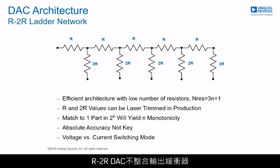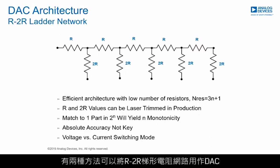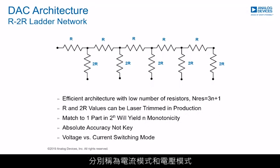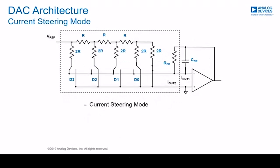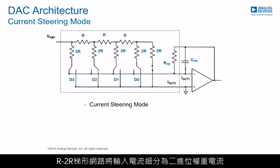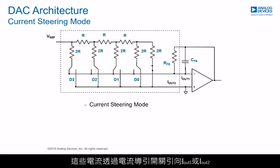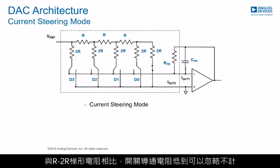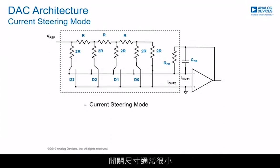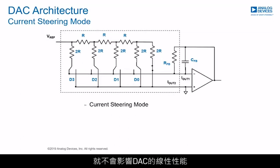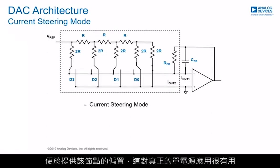R-2R DACs do not integrate output buffers, giving the possibility to customize DAC performance depending on the required distortion and desired precision. There are two ways the R-2R ladder network may be used as a DAC: current mode and voltage mode. In a current steering DAC, the R-2R ladder divides the input current into binary weighted currents, and these currents are steered to IOT1 or IOT2 by current steering switches. Switch on-resistance is low enough to be negligible compared with the R-2R ladder resistors, and switch sizes are generally scaled to ensure each switch has the same voltage drop, preserving linearity. The DAC termination resistor is generally tied to the IOT2 line to facilitate biasing for true single supply applications.